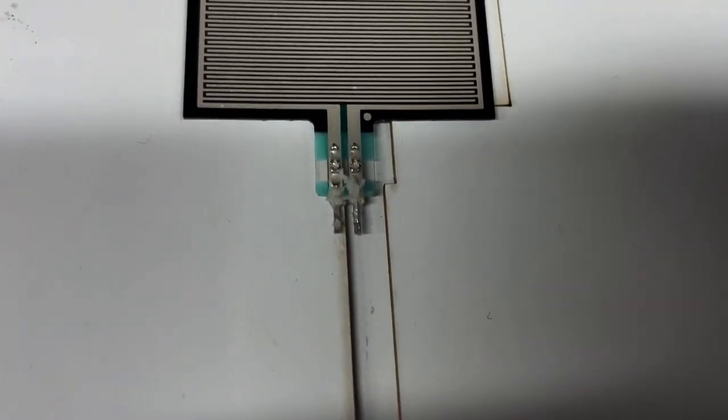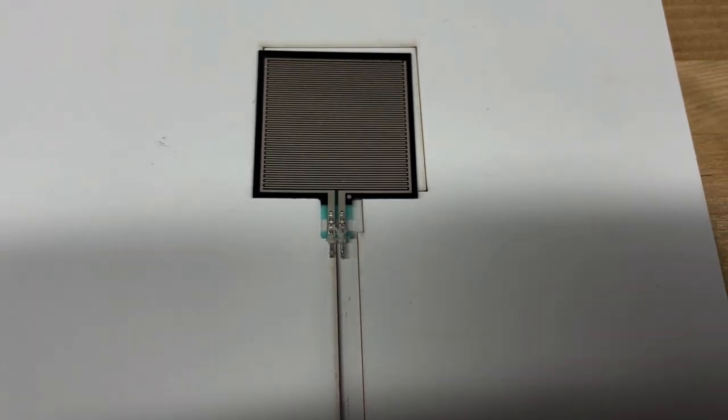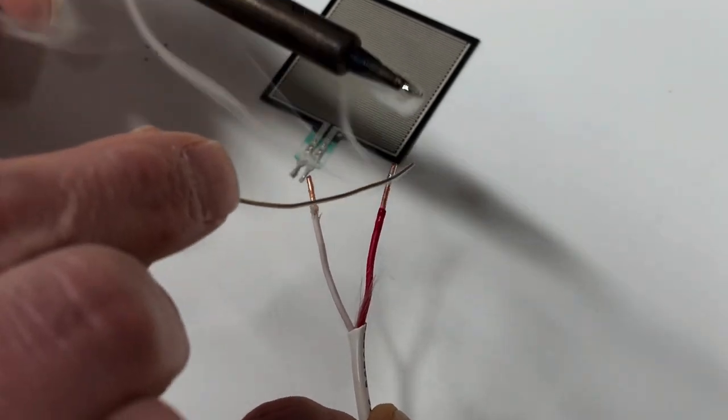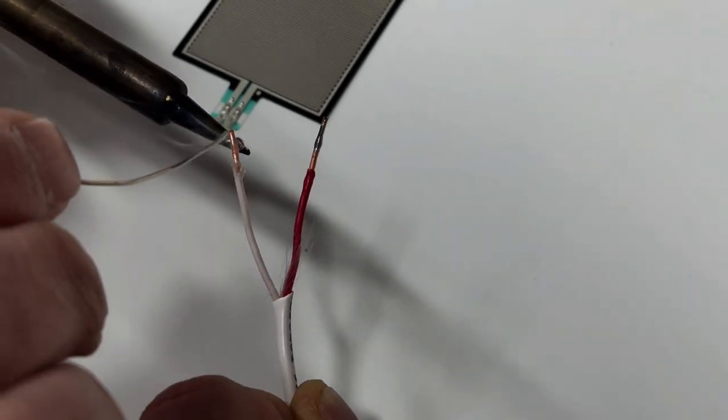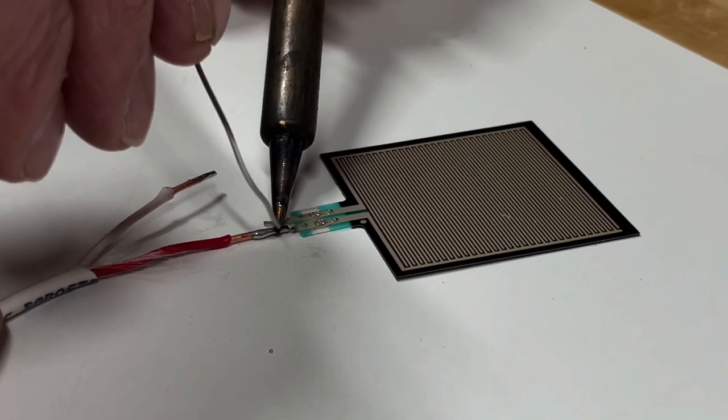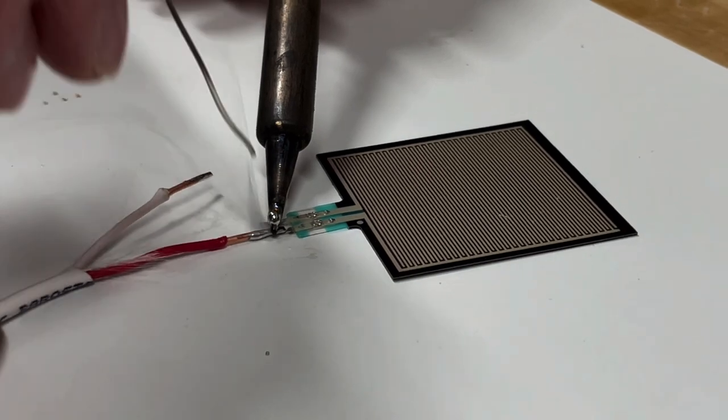Now I'm just tinning my 18 gauge solid core wire. It's this gauge so I can plug it into a breadboard for easy prototyping. But I'm just tinning this so that I can make the easier soldering of the whole thing.